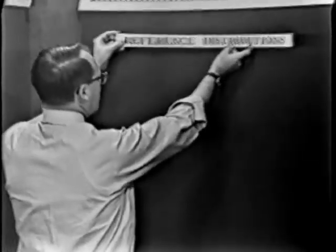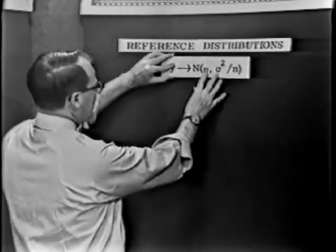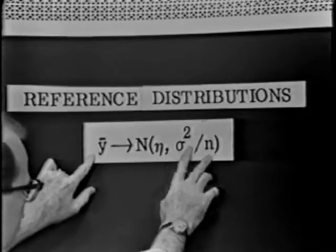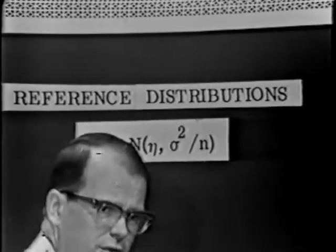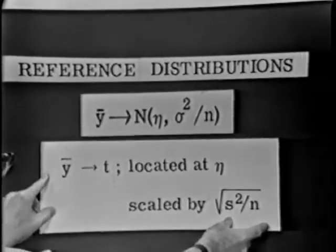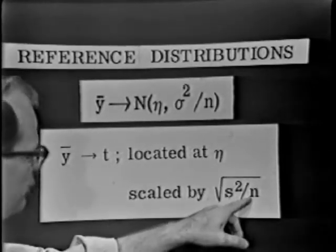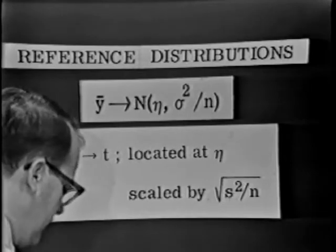Well, now, what's the reference distribution for averages? The reference distribution for averages is a normal distribution with a mean η and a variance σ² over n. So let's put that up right away. The reference distribution for averages is a normal with mean η and variance σ² over n. But of course, we don't know σ², and so what does that do to the reference distribution for the averages? It turns it into a t distribution. That t distribution looks a lot like a normal. It's located there at η, but it's scaled by s² over n instead of by σ² over n.